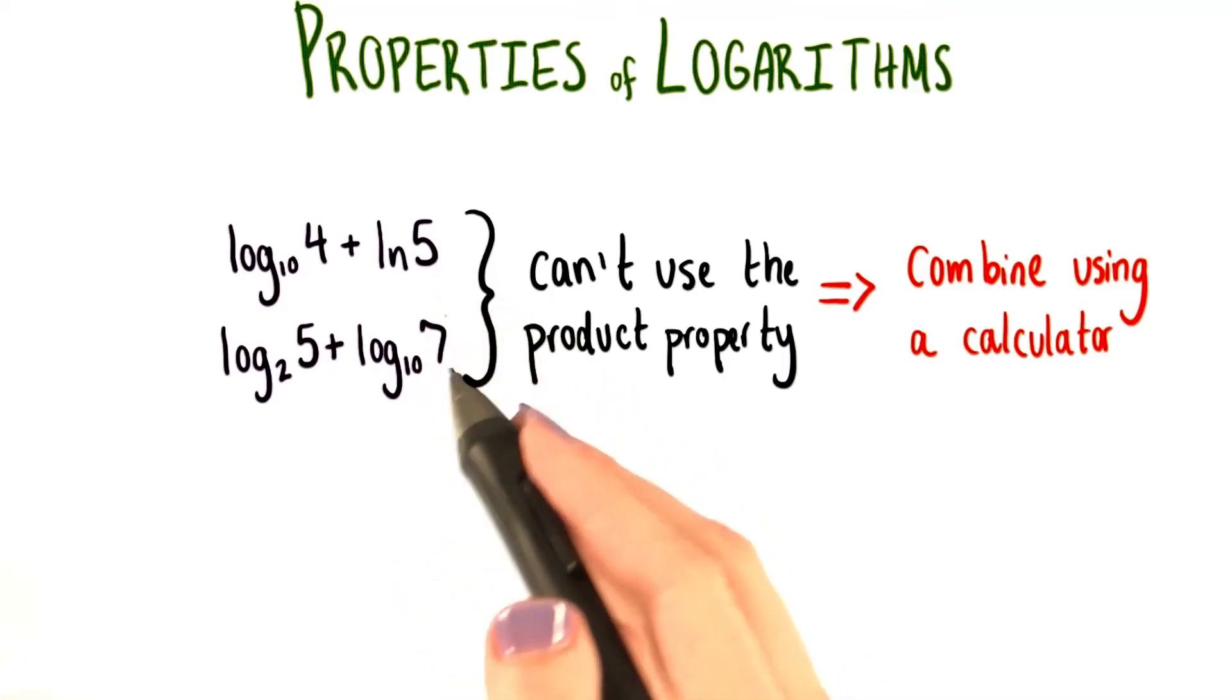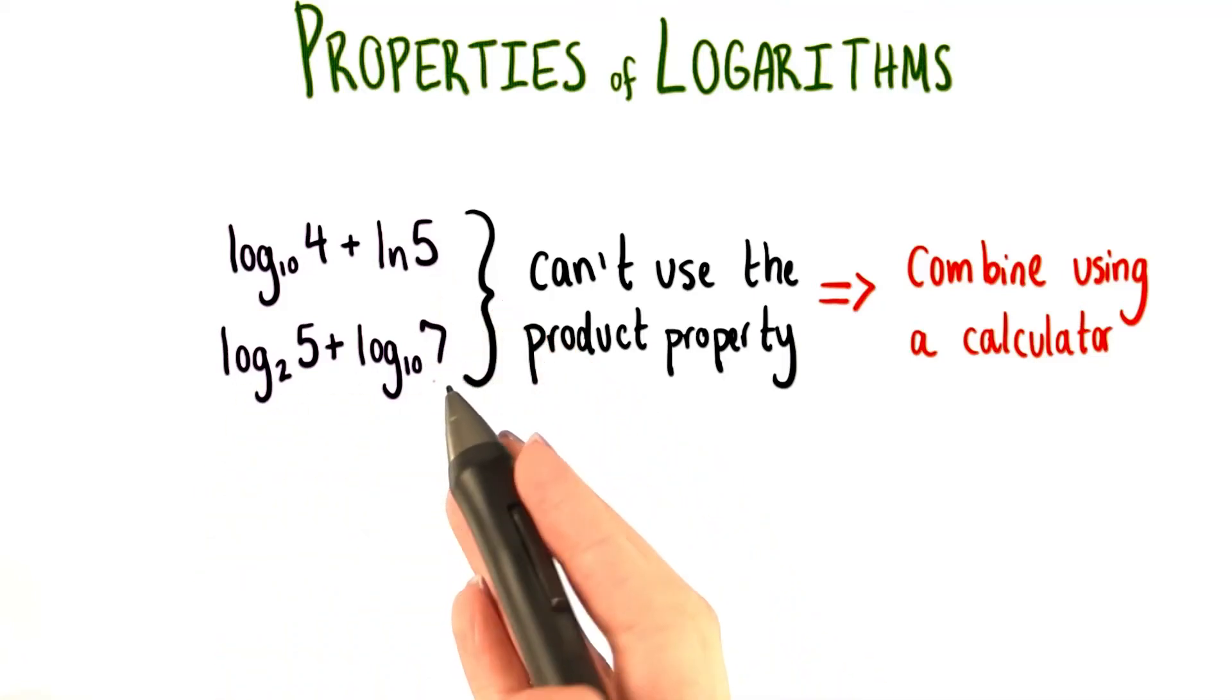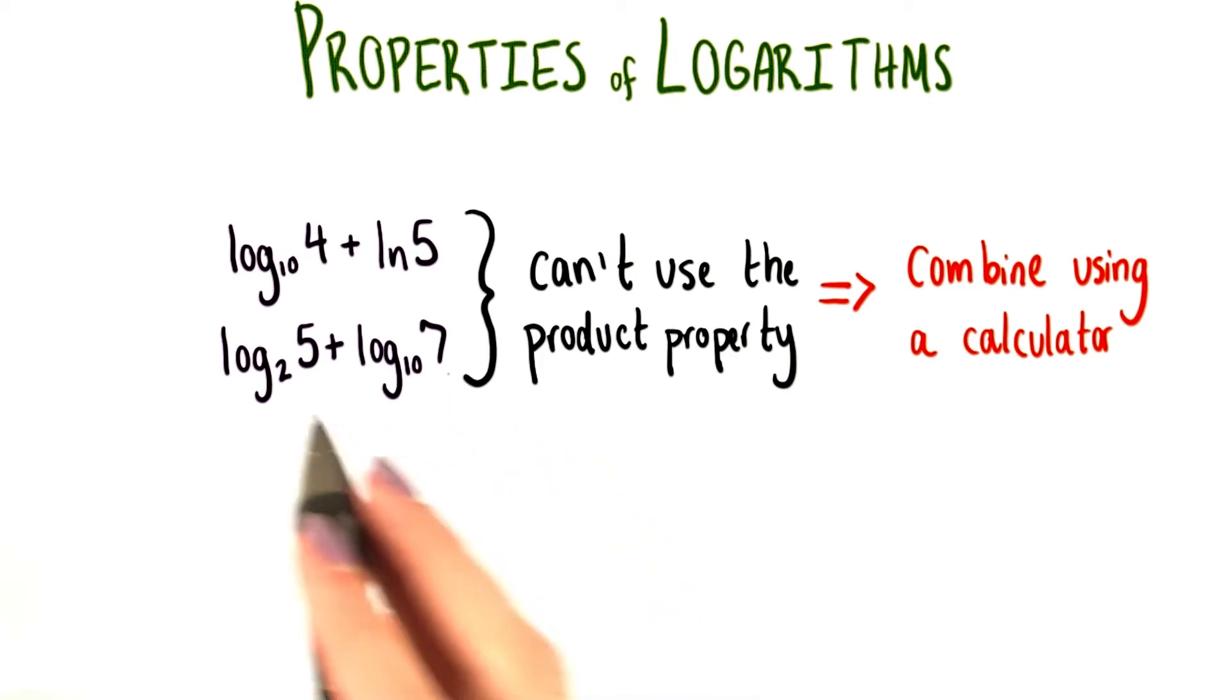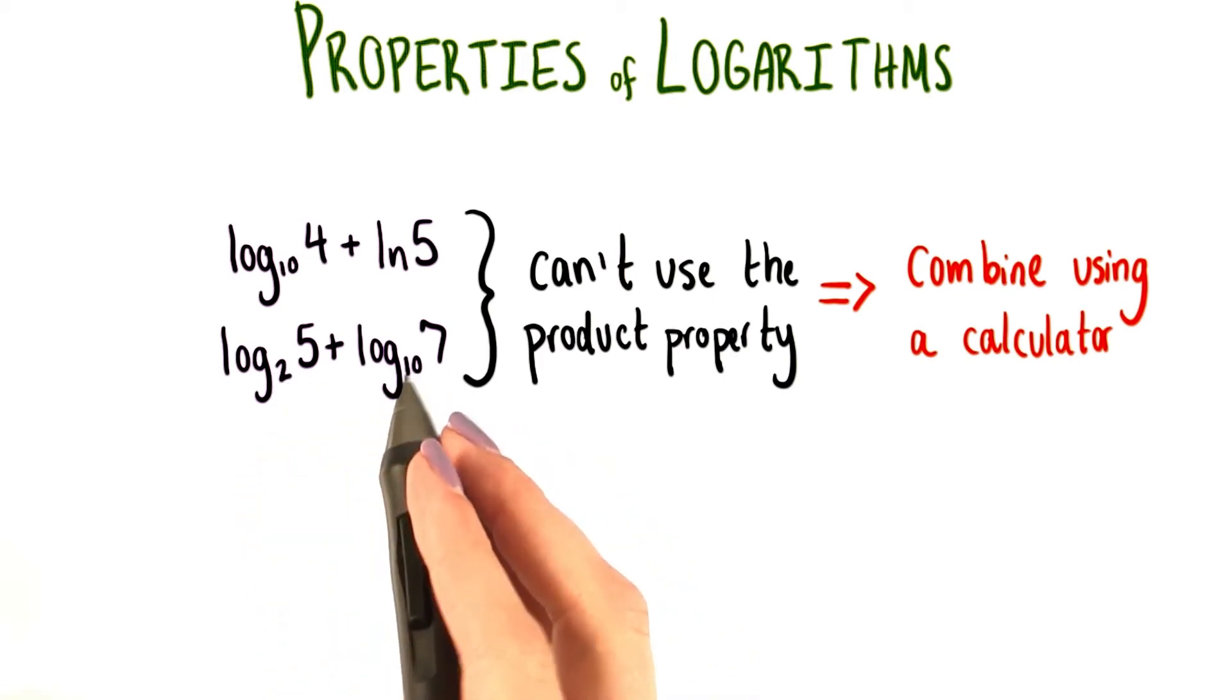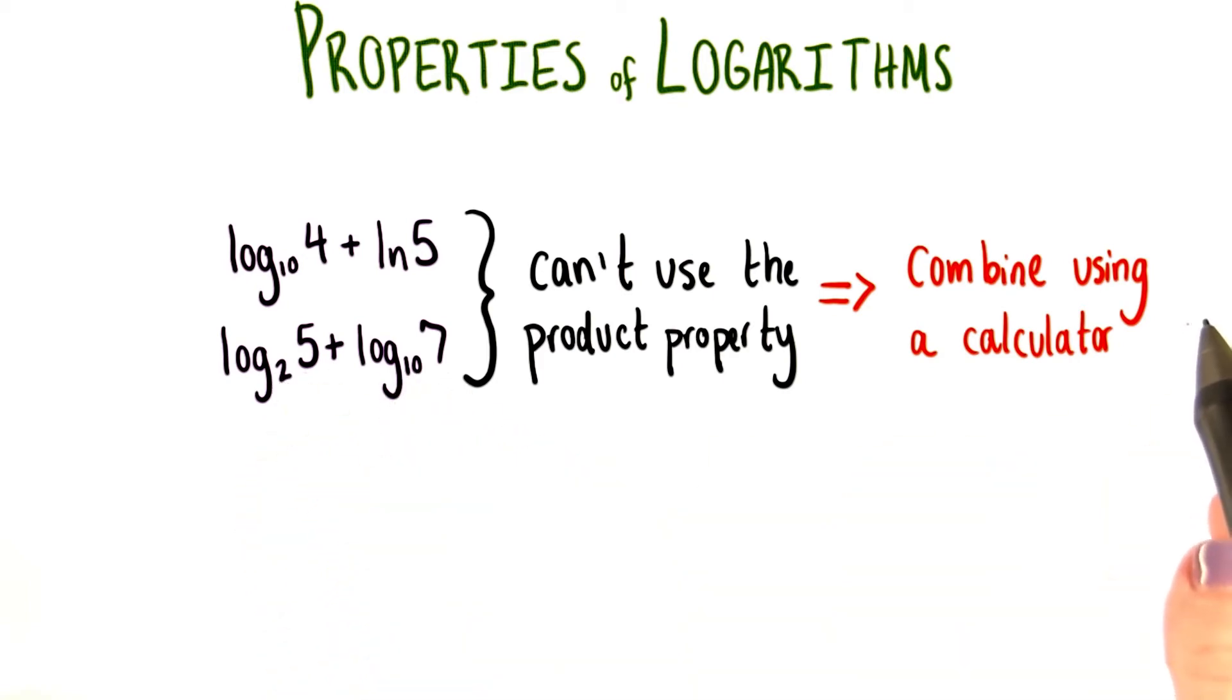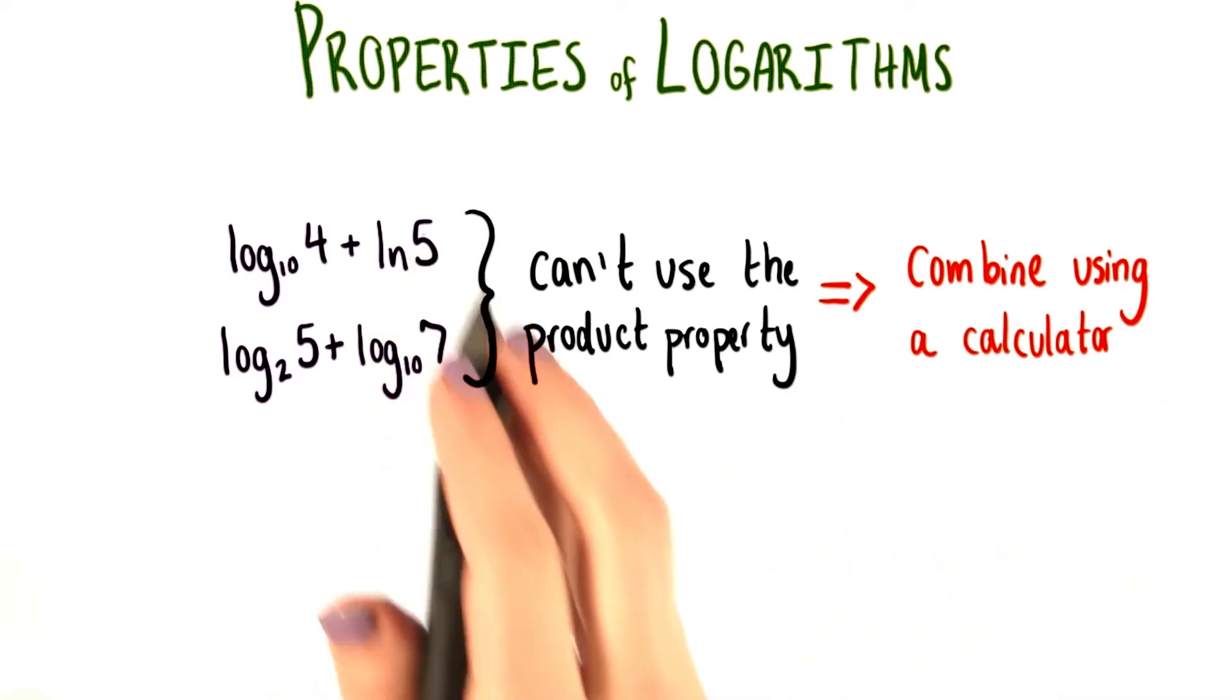We know that we can't use the product property to combine either of these pairs of logs since they have different bases. However, let's try grabbing our calculator and seeing if we can add them.